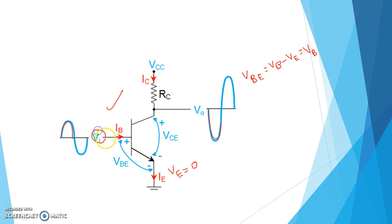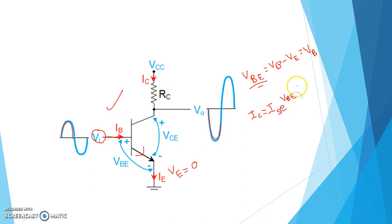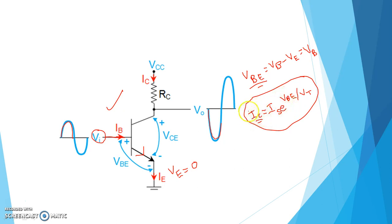The input voltage VI is basically the base voltage VB, because it is directly connected to the base of this NPN transistor. Now suppose when VI increases, then VB increases, which means VBE will increase. We know for an NPN transistor, IC equals Is times e to the power VBE over VT, where VT is the thermal voltage. So if VBE increases, then IC will exponentially increase — a small increment in base-emitter voltage causes a huge increment in collector current.